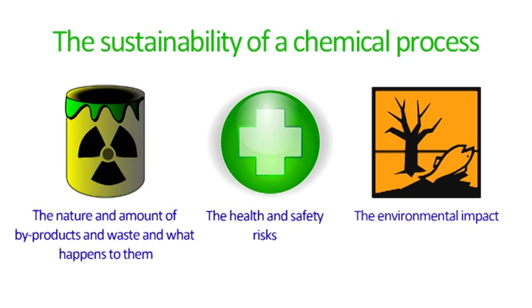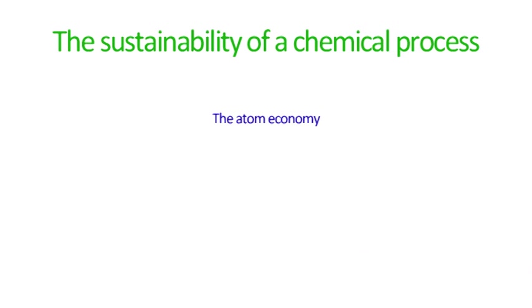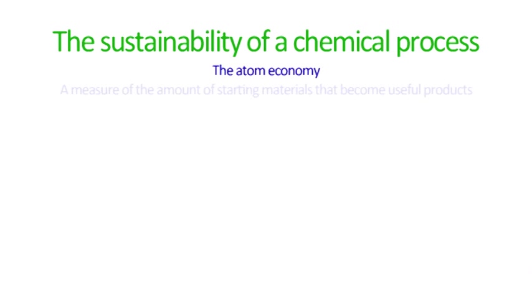Finally, a really important way to chemically analyze and compare the sustainability of products is by working out the atom economy. This is basically a measure of the material that you start with and how much of them become the products that you want to make.